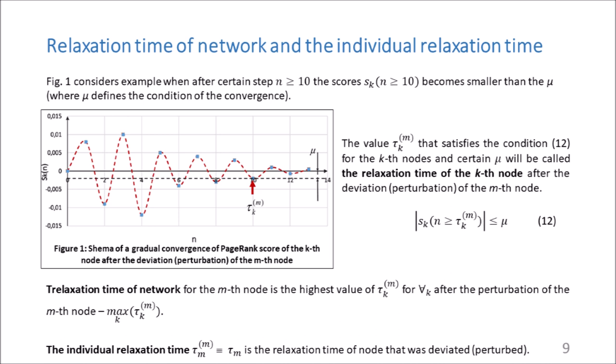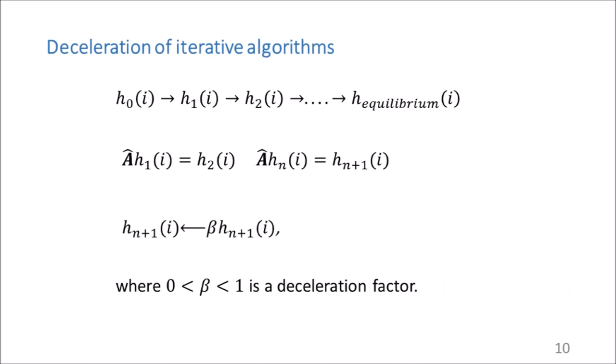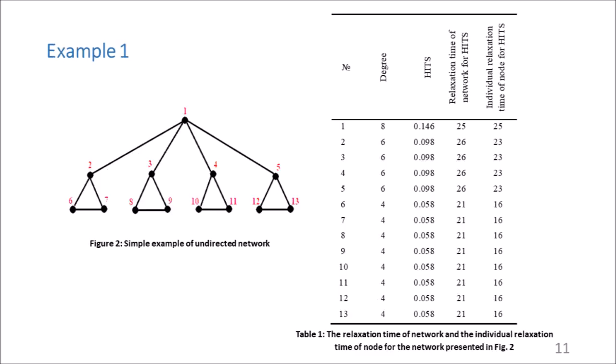In this work, the individual relaxation time is also proposed and researched. The individual relaxation time is the relaxation time of a node that was perturbed. The above process of calculating the relaxation time can be successfully applied to a reduced matrix. However, when the network has a large number of links, the iterative process of recalculating the scores of nodes after their perturbation achieves the equilibrium state quickly. In order to decelerate the convergence to the equilibrium solutions after perturbation, we propose to decelerate the HITS or PageRank algorithm respectively. After perturbing one of the network nodes, the corresponding iterative HITS or PageRank algorithm with deceleration is applied.